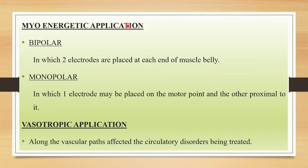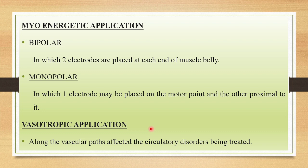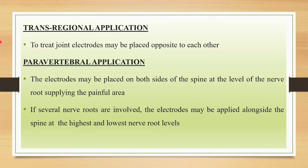The myo-energetic application also has bipolar and monopolar techniques. In bipolar, two electrodes are placed at each end of the muscle belly. In monopolar, one electrode is placed on the motor point and the other proximal to it. For vasotropic applications, the electrodes are used over the pathway of blood vessels in cases of circulatory disorders. For trans-regional applications to treat joints, electrodes are placed opposite to each other within the joint area.